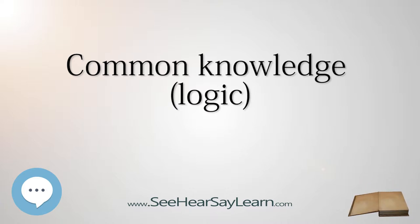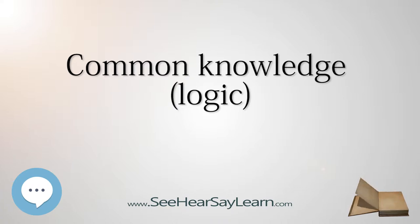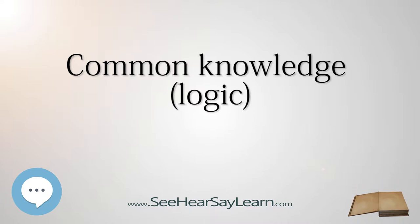The outsider, furthermore, is known by all to be truthful, and all know that all know this, and so on — it is common knowledge that he is truthful. Thus it becomes common knowledge that there is at least one islander who has blue eyes. The problem: assuming all persons on the island are completely logical, and that this too is common knowledge, what is the eventual outcome?